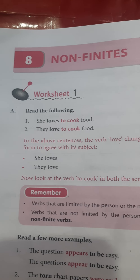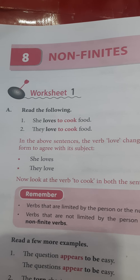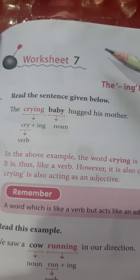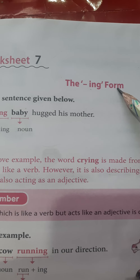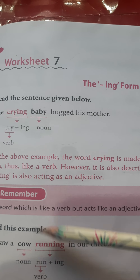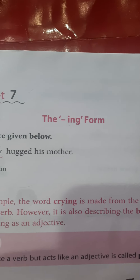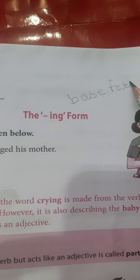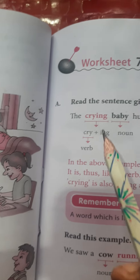Hello students, you are connected to your online English class. Today we are going to continue with chapter 8 non-finites and it's the turn of worksheet number 7. So let's go for it. Worksheet number 7 relates to the ing form. It means you will get the sentences related to the ing form, and we know it well that the ing form is always applied with the base form of the verb — the first form of the verb.